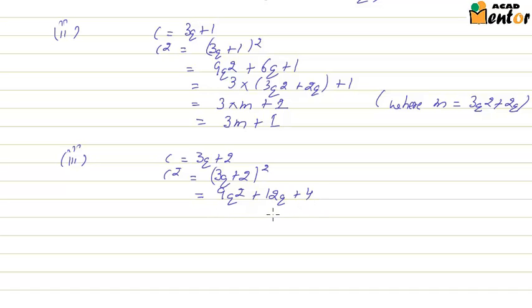Again, 9q square plus 12q are both multiples of 3, but 4 is not. So what we will do is we will split 4 into sum of 3 plus 1. We can do that, right? So 4 becomes 3 plus 1. Now we will club these first three terms and take 3 as common.